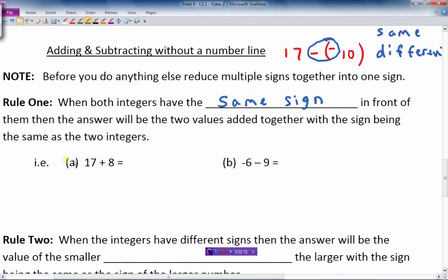So here we have 17 plus 8, this is a positive 17, that's a positive 8, and so put those together, I add them together, I get 25, and it's a positive 25 because they're both positive. Two positives make a bigger positive.